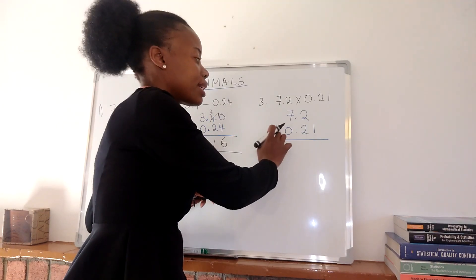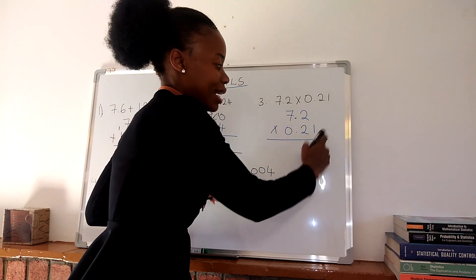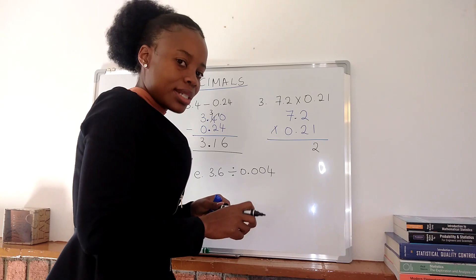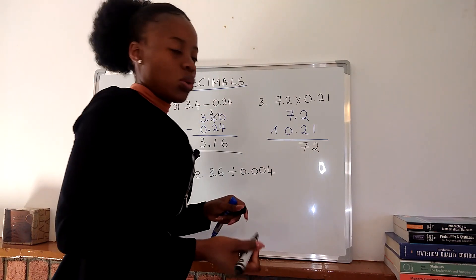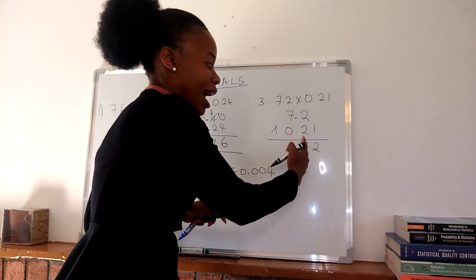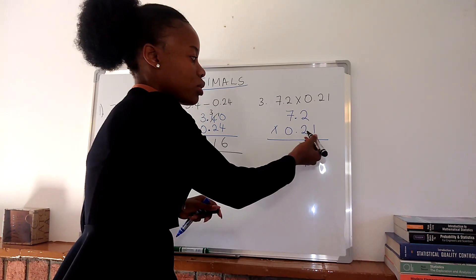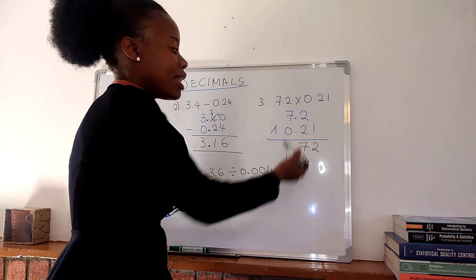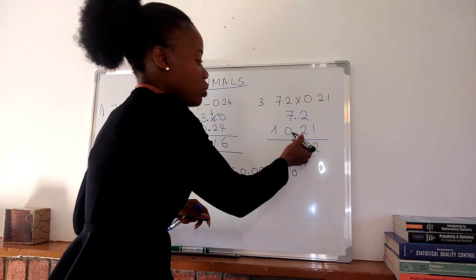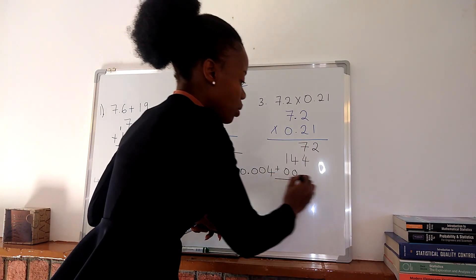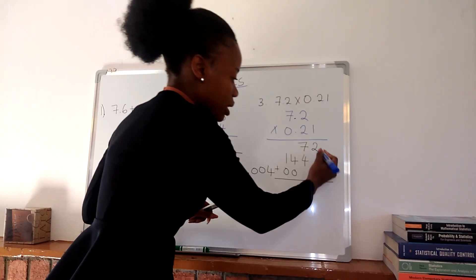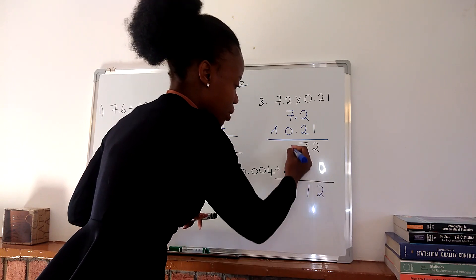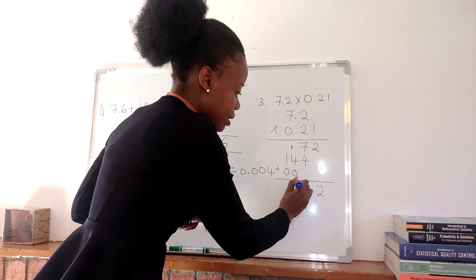So 1 times 2 is 2 — write the 2 under this column. Then 1 times 7 is 7. Next, 2 times 2 is 4 — write that 4 under the 2. And 2 times 7 is 14. Then 0 times 2 is 0, and 0 times 7 is 0. Adding up the columns: 7 plus 4 is 11 — write 1 and carry 1; 4 plus 1 is 5; and 1 plus 0 is 1.